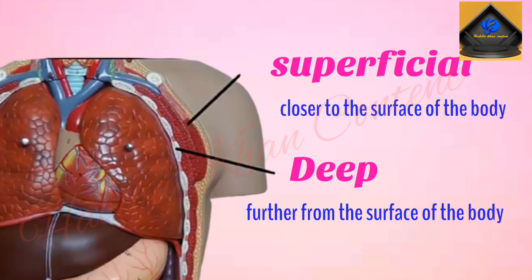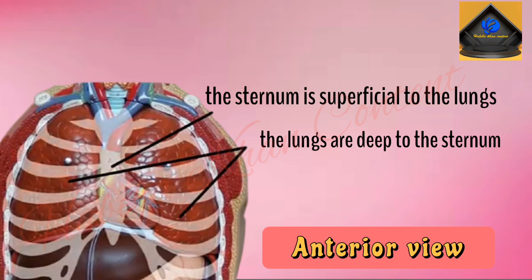Superficial and deep are another set of directional terms. Superficial means closer to the surface of the body, and deep means further away from the surface of the body. So we would say the sternum is superficial to the lungs, or the lungs are deep to the sternum. Remember this is the case when we are looking at the body from the front, or anterior view, when it is in the anatomical position.